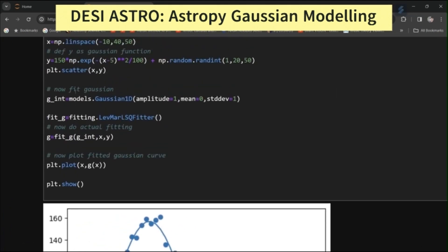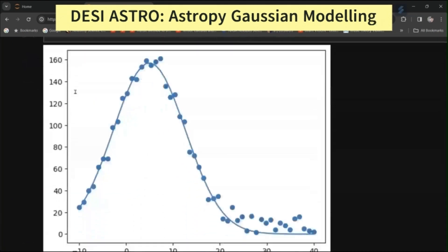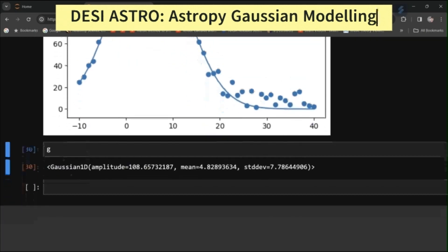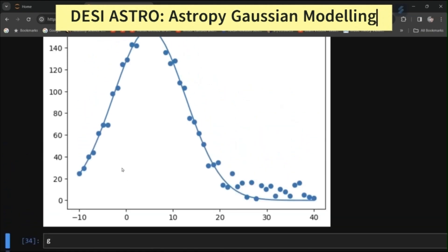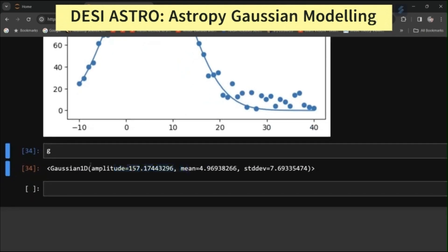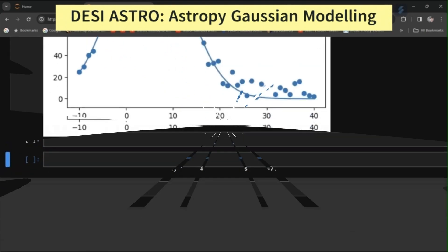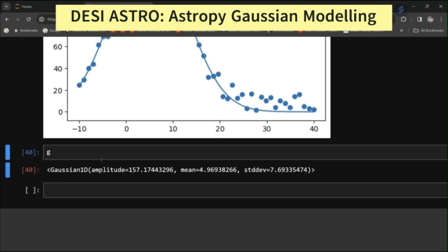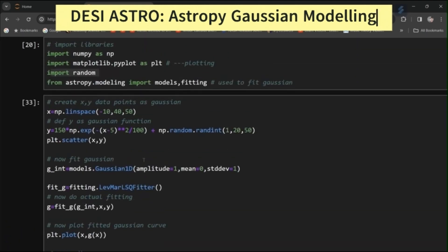And now see the parameters. Here you have parameters g. You have amplitude, you have mean, and you have deviation. These are the parameters. And then you can give a label to these plots.